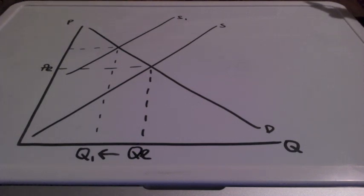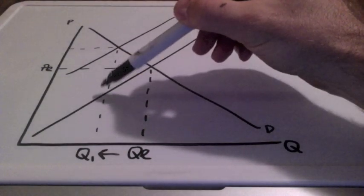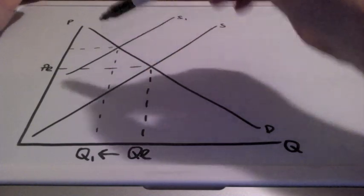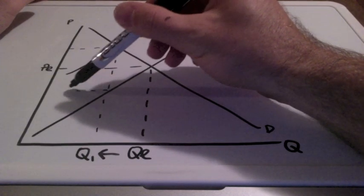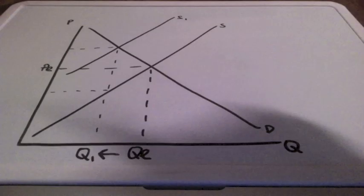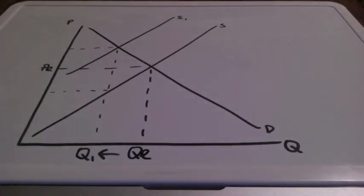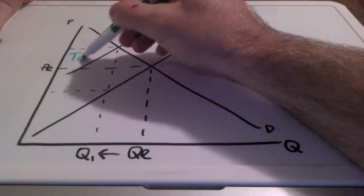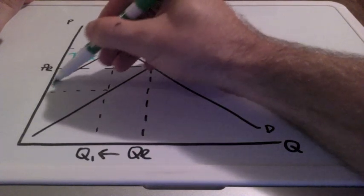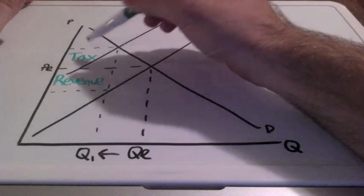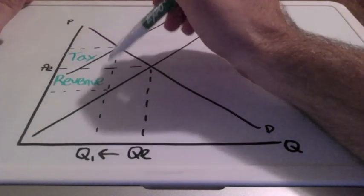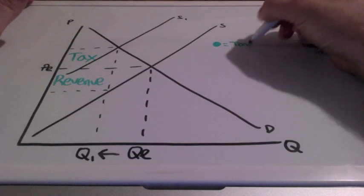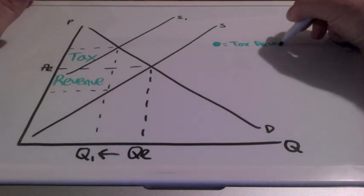Tax revenue can be found when we take a look at the vertical distance between our supply curves, so I bring this all the way over here and tax revenue is seen in these two areas. This entire square represents tax revenue.